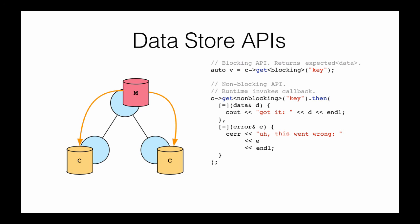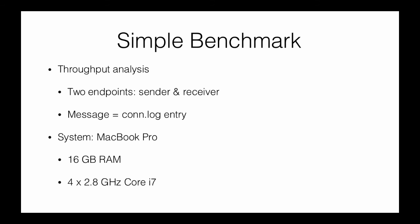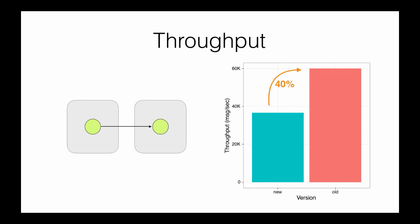We wrote the current version from scratch and benchmarked it. With two endpoints — sender and receiver — we measured throughput in messages per second and saw roughly a 40% increase in messaging throughput. Right now we have around 60,000 messages per second for a Bro conn log entry, which was the unit used for the benchmark.